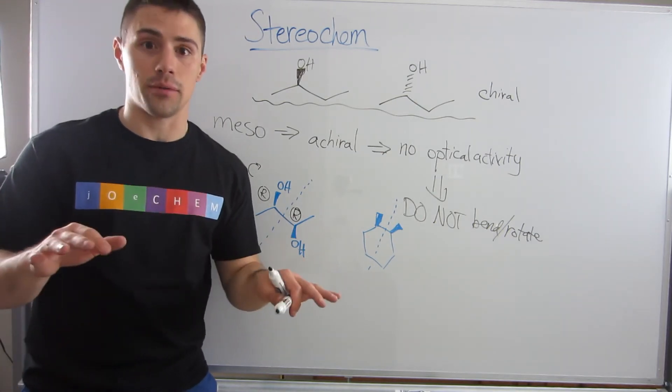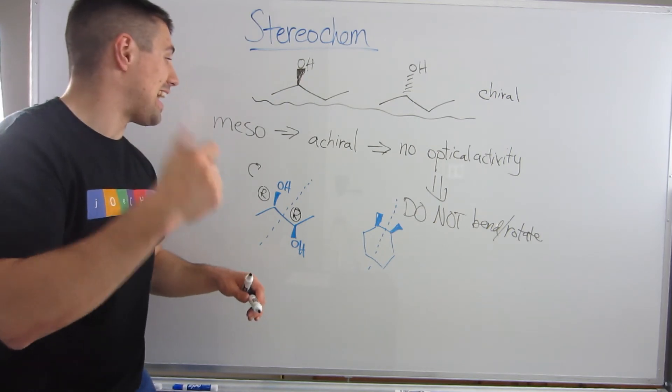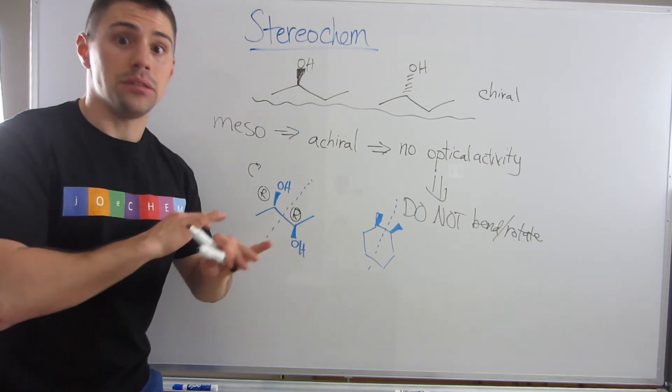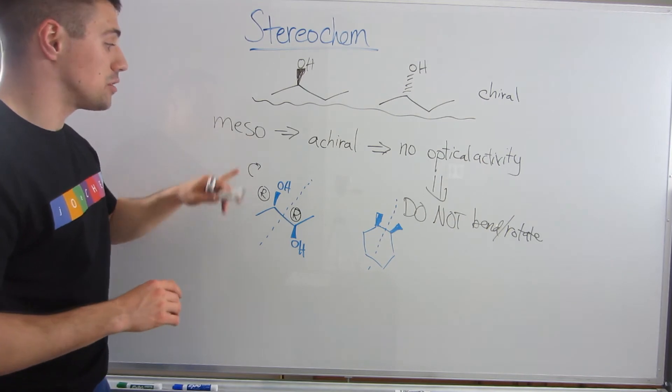So even if you have stereocenters, it does not guarantee chirality. You need to have stereocenters and to not be meso, a.k.a. to not, if you are meso, you're symmetric.